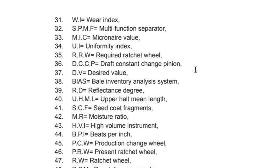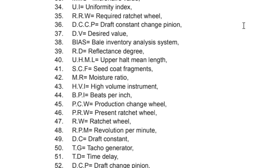Additional spinning abbreviations: DCCP – Draft Constant Change Pinion; DV – Desired Value; BIAS – Bell Inventory Analyze System; MRD – Reflectance Degree; UHML – Upper Half Mean Length; SCF – Speed Coat Fragments; MR – Moisture Ratio; HVI – High Volume Instrument; BPI – Bits Per Inch; PCW – Production Change Wheel; PRW – Present Ratchet Wheel; RW – Ratchet Wheel.